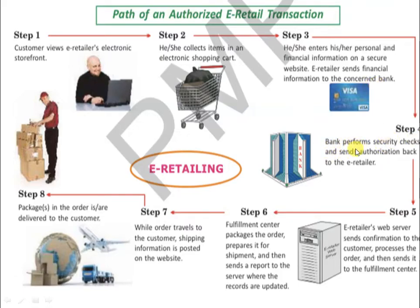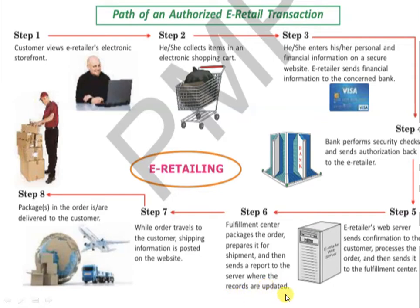Step four: the bank performs security checks and sends authorization back to the e-retailer. Step five: the e-retailer's web server sends confirmation to the customer, processes the order, and sends it to the fulfillment center. Step six: the fulfillment center packages the order, prepares it for shipment, and sends a report to the server where records are updated.